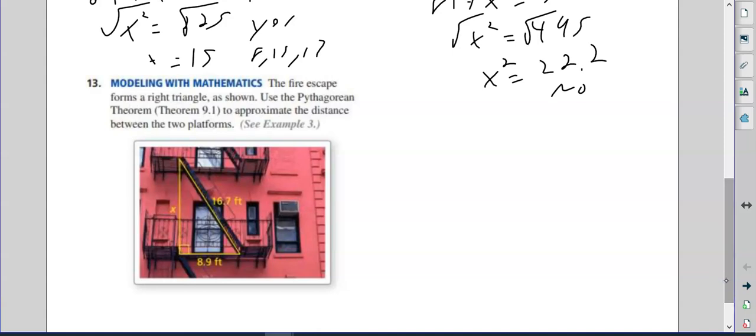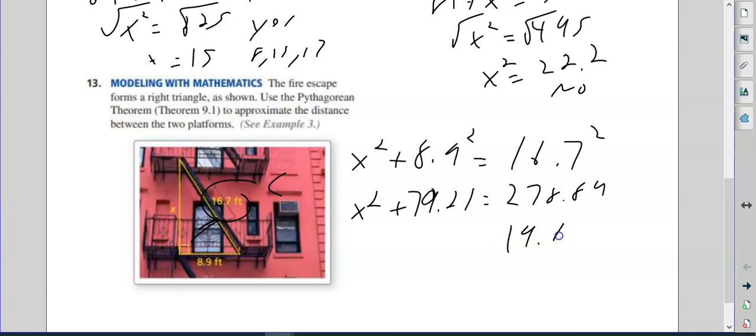Number 13: the fire escape forms a right triangle. It's hard to see, but this is my c right here, opposite the right angle. So x squared plus 8.9 squared equals 16.7 squared. x squared plus 8.9 squared is 79.21, and 16.7 squared is 278.89. So we subtract the 79.21 and we get 199.68.